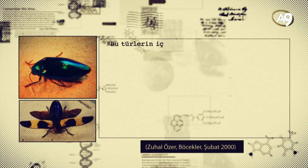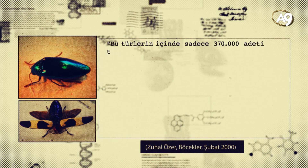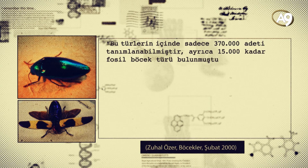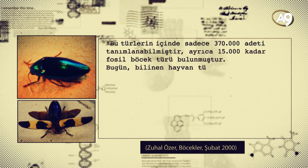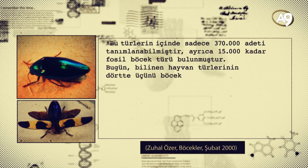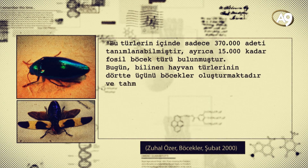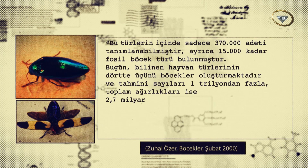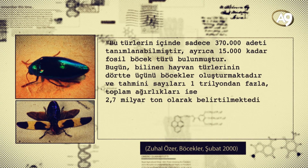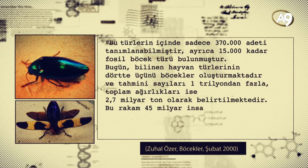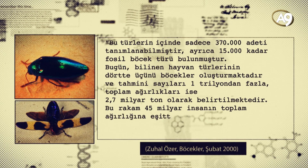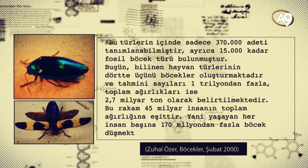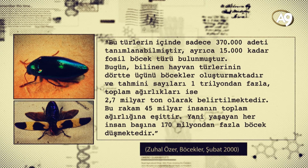Bu türlerin içinde sadece 370 bin adedi tanımlanabilmiştir. Ayrıca 15 bin kadar fosil böcek türü bulunmuştur. Bugün bilinen hayvan türlerinin 4'te 3'ünü böcekler oluşturmaktadır ve tahmini sayıları 1 trilyondan fazla, toplam ağırlıkları ise 2.7 milyar ton olarak belirlenmektedir. Bu rakam 45 milyar insanın toplam ağırlığına eşittir. Yani yaşayan her insan başına 170 milyondan fazla böcek düşmektedir.